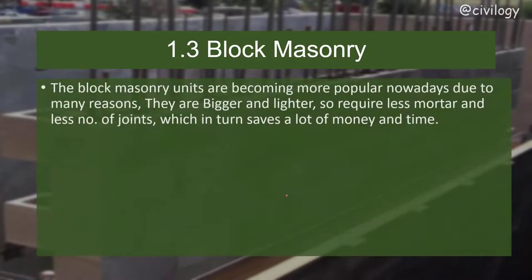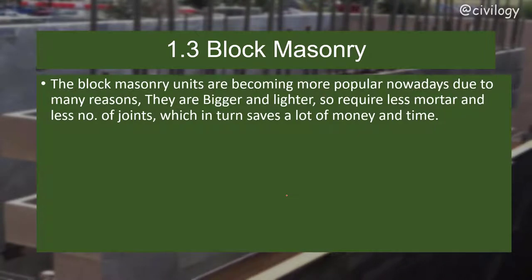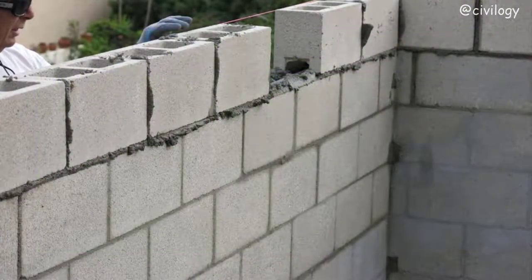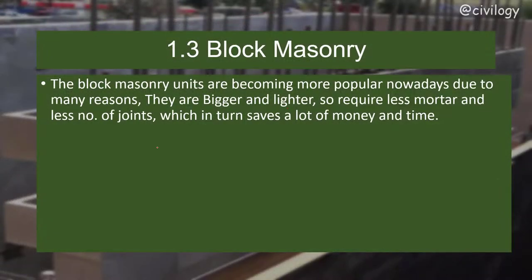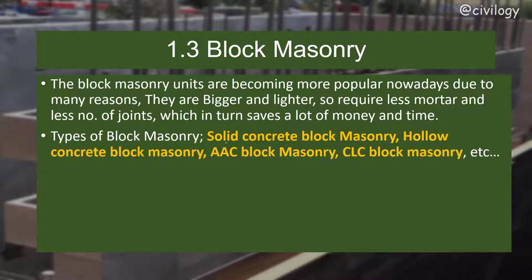Block masonry units are becoming more popular nowadays. They are bigger and lighter, requiring less mortar and fewer joints, which saves a lot of money. Types of block masonry include solid concrete block masonry, hollow concrete block masonry, AAC block masonry, and CLC block masonry.